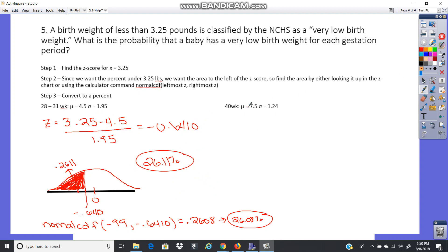And then let's take a look at the second one. So at full gestation, 40 weeks, what's that probability? Probably pretty small. So we go 3.25 minus 7.5 over 1.24. So 3.25 minus 7.5 over 1.24 gives us a negative 3.4274.